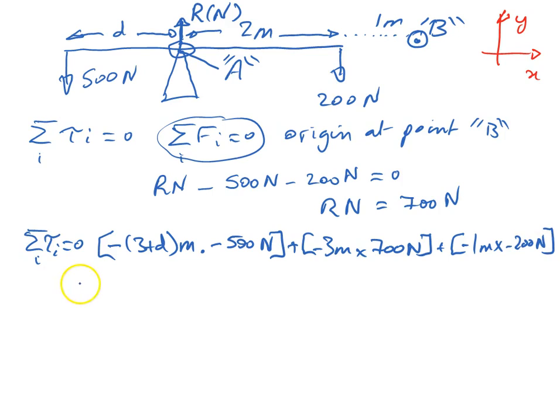So, expanding that, we have 0 equals minus 3 times minus 500 is plus 1500 newtons meters. Minus d times minus 500 is plus 500 newtons times d meters. Minus 3 times 700 is minus 2100 newtons meters. And minus 1 times minus 200 is plus 200 newtons meters.